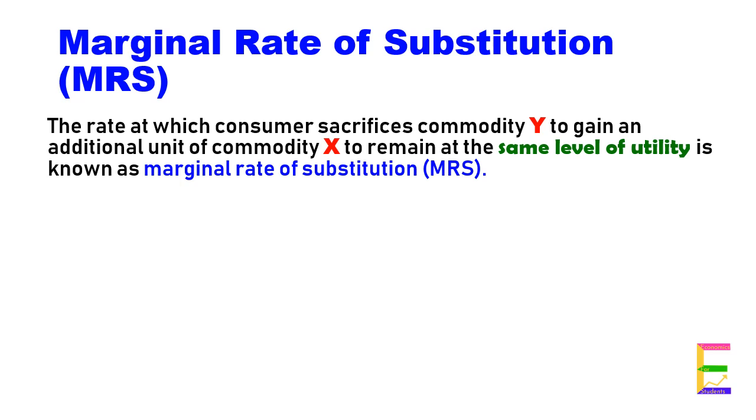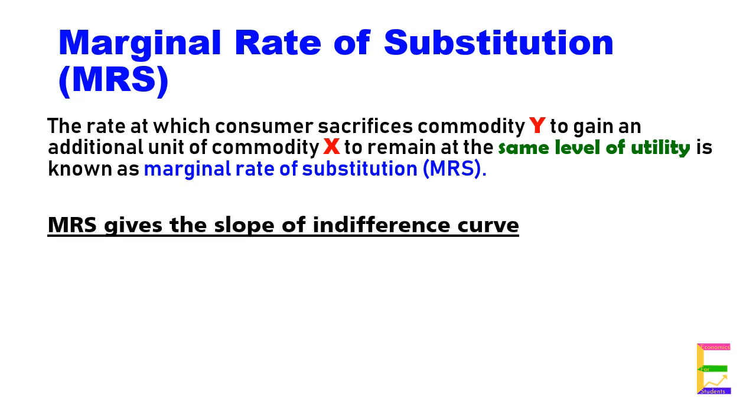MRS gives the slope of the indifference curve, and it is equal to delta Y by delta X, where delta Y is the change in good Y and delta X is the change in good X.